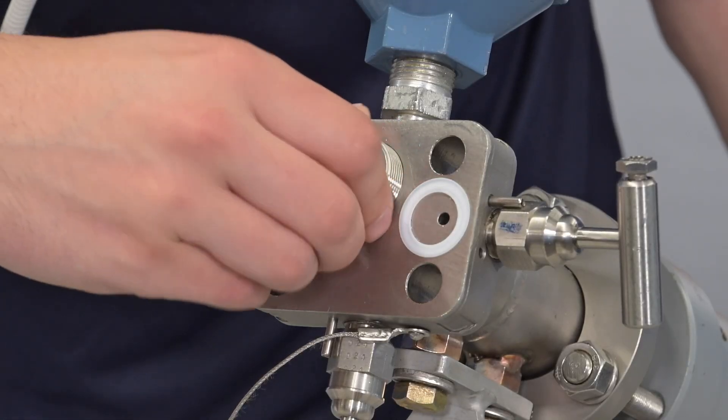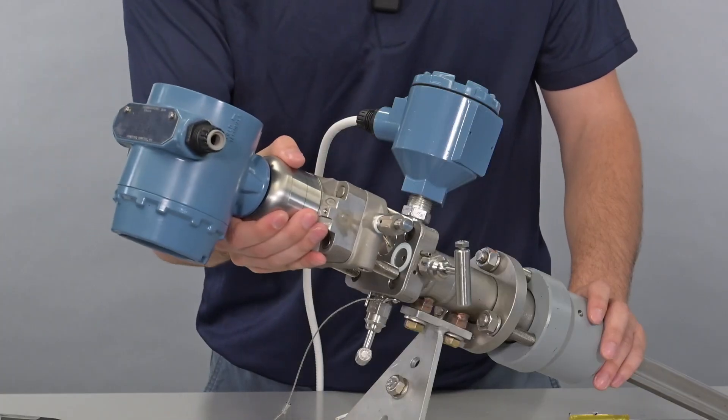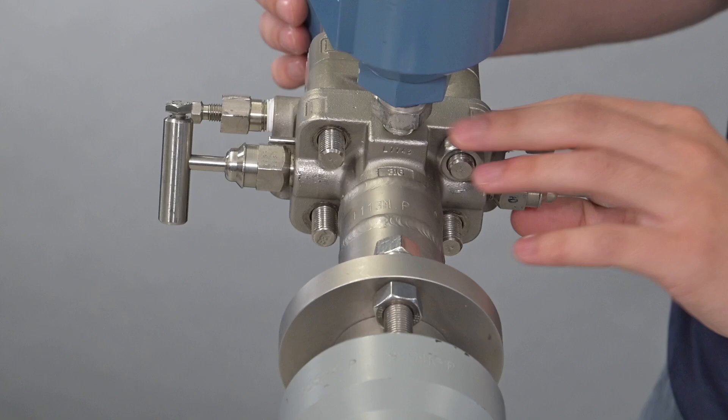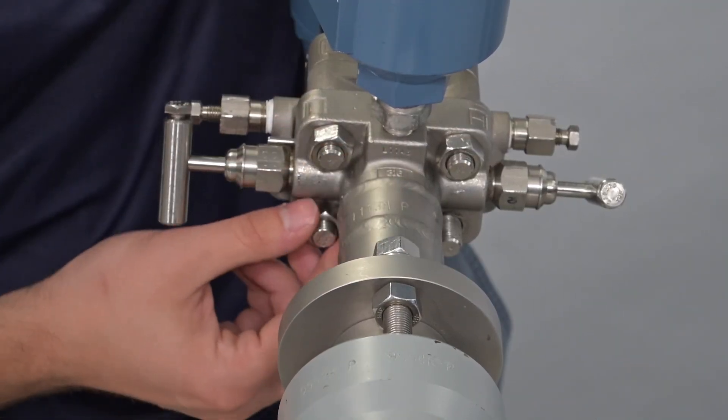Reinstall the threaded RTD plug using a large screwdriver. Reconnect the transmitter and hand tighten the bolts in a cross pattern.